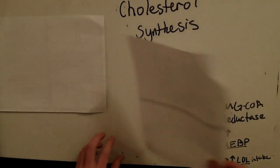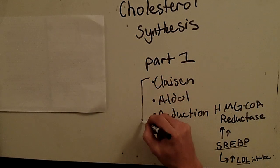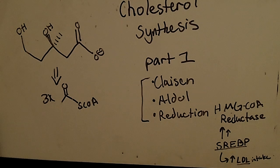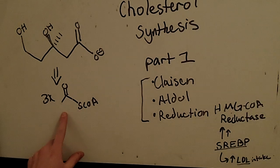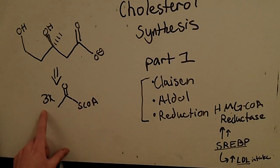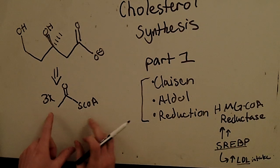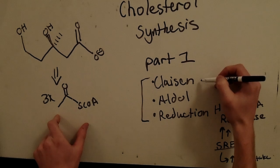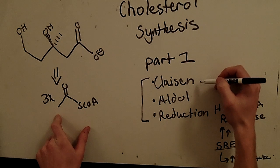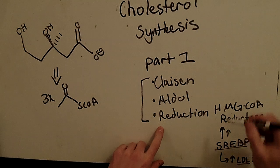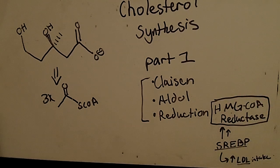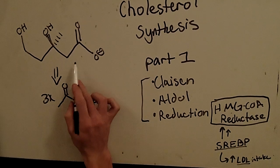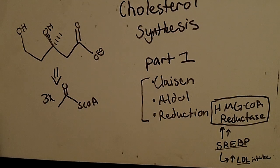I like to look at this as primarily three sub-steps to get to mevalonate: the Claisen condensation, which is a condensation between two acetyl-CoAs; an aldol reaction with those two Claisen-condensed acetyl-CoAs; and lastly a reduction, which is performed by HMG-CoA reductase. Let's look at the structure we're trying to reach and see if we can make sense of this.